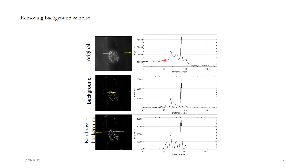So let's see how we can get rid of the background and noise. If we draw a region of interest here and use that intensity to simply subtract the background, that will not be enough because the background is uneven. ImageJ has an algorithm called rolling ball background subtraction method, which we'll be discussing in the coming slides.